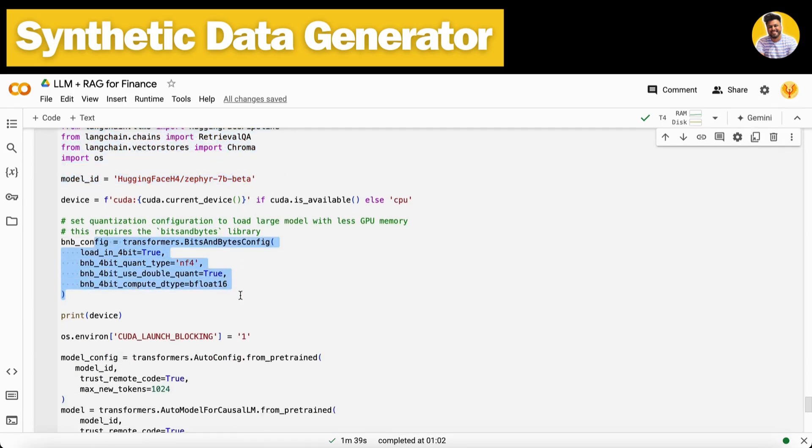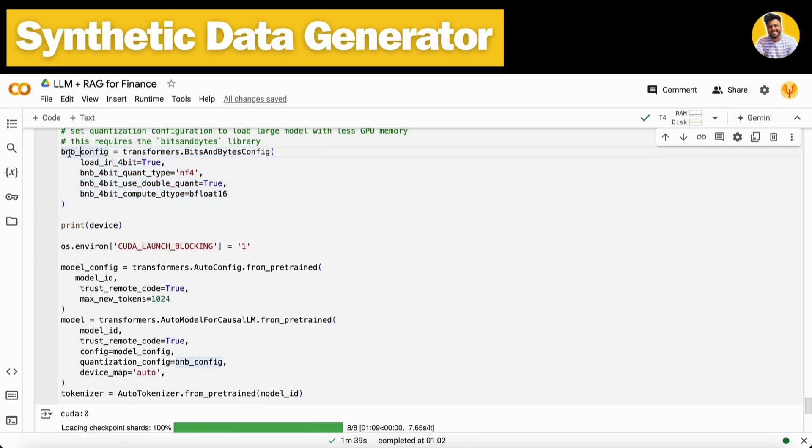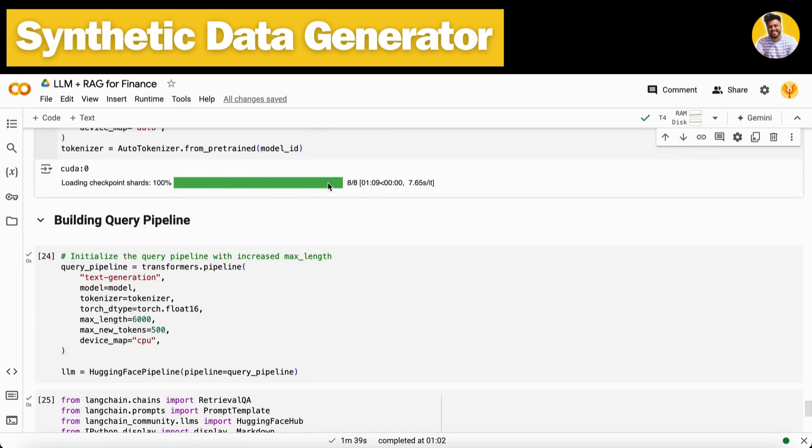Then we load our large language model, which is Zephyr 7B Meta. I load it in quantized format because if I don't quantize it, it will take up more space, time, and memory. I built my quantization configuration and passed it in while I loaded the model.